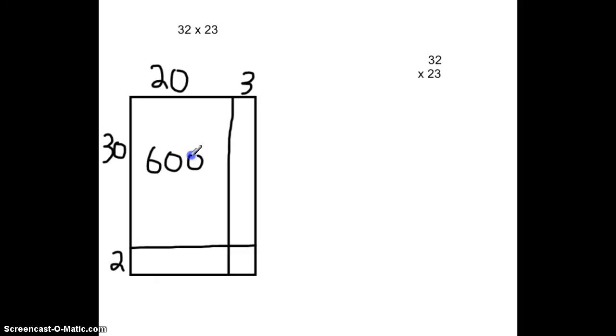Likewise, we can go to the rectangle on the right. 3 times 30 is equal to 90. 20 times 2 is equal to 40. And then our final rectangle is 3 times 2 is 6.